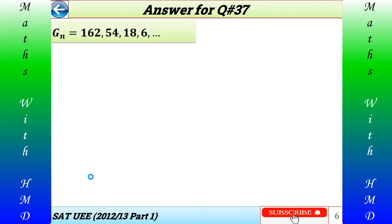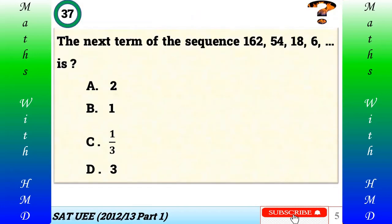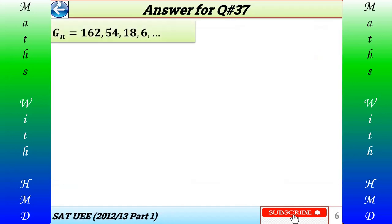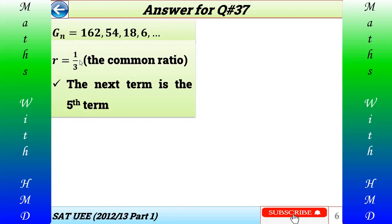Here is the answer for question number 37. As you can see from the given sequence, it seems to be a geometric sequence. The first term is 162, the second term is 54, the third term is 18, and the fourth term is 6. We are required to find the fifth term. This is a geometric sequence with a common ratio of 1/3.